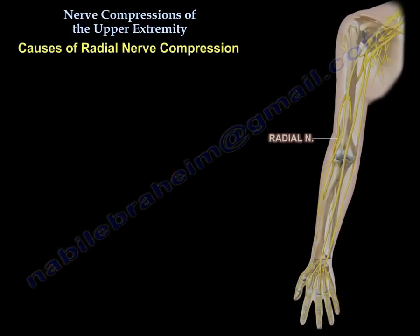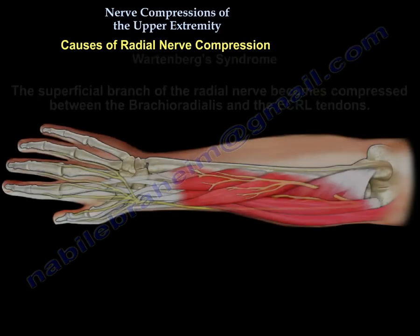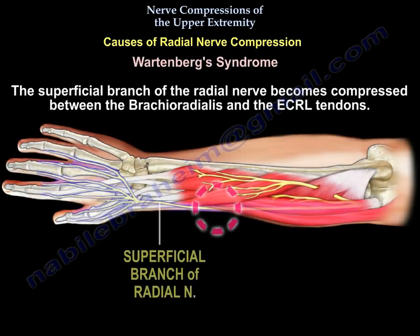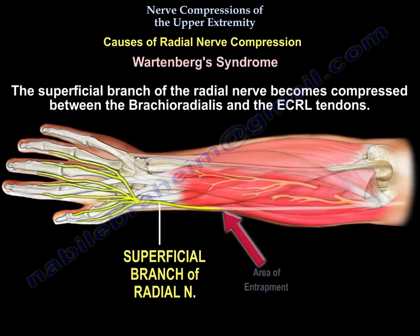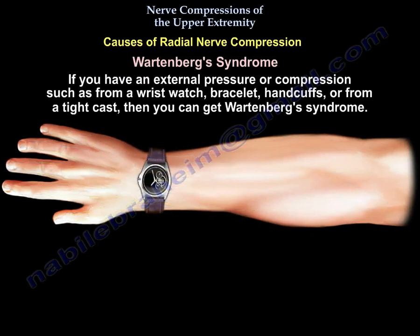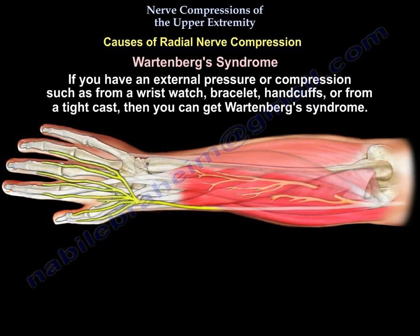Now let's talk about causes of compression of the radial nerve. Wartenberg syndrome involves the superficial sensory branch of the radial nerve; it gets compressed between the brachioradialis and the extensor carpi radialis longus. This can occur due to external pressure or compression from a wristwatch, bracelet, handcuffs, or a tight cast.